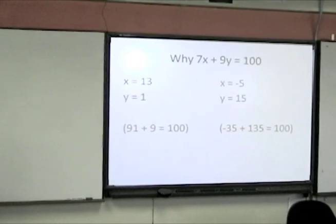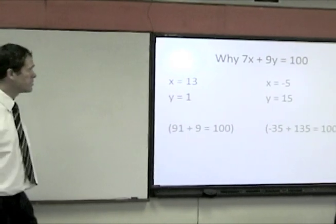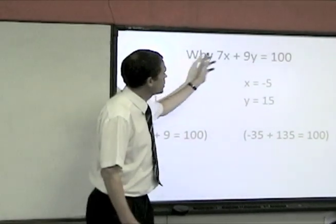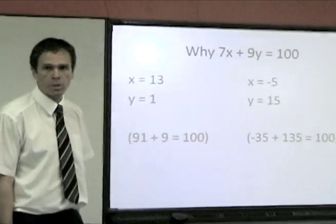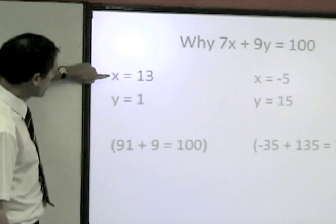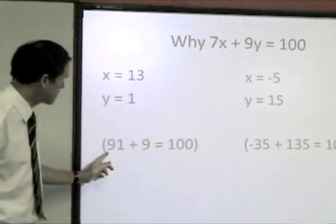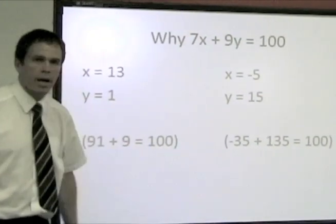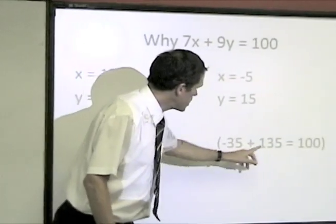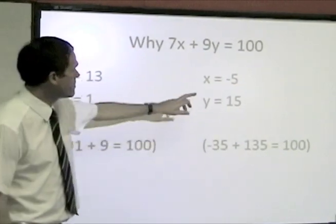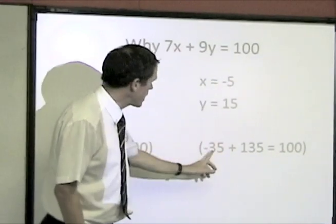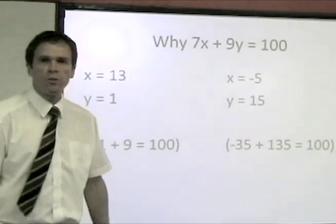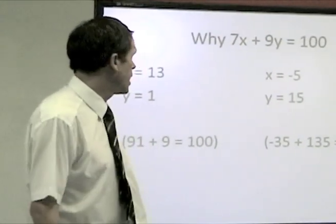So let's go back now and just look at two of these solutions. First of all the 91 and the 9. And I am asking the question. Why is this 7x plus 9y equals 100? Well look. x equals 13. 7 times 13 is my 91. y equals 1. 9 times 1 is 9. And there is my 100. And now, minus 35 and 135. x equals minus 5. 7 times minus 5 is minus 35. And then 9 times 15 is 135. And that gives me a total of 100.